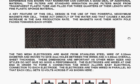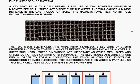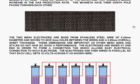A key feature of this cell is the use of two powerful neodymium magnets per cell. These act directly on the water and that causes a major increase in the gas production rate. The magnets have their north poles facing towards each other.